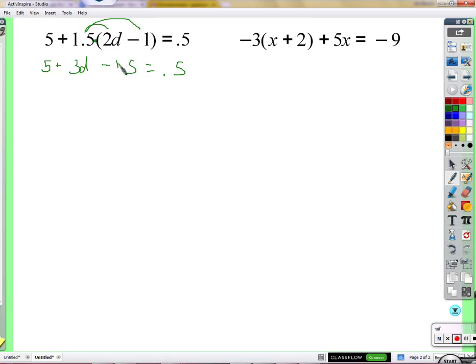Now we have a 5 and a negative 1.5. So let me just go ahead and subtract those two things. So 5 minus 1.5 is 3.5. That equals .5. Now I'll subtract 3.5 from both sides. 3d equals .5 minus 3.5 is going to be negative 3. Divide by 3 on both sides.